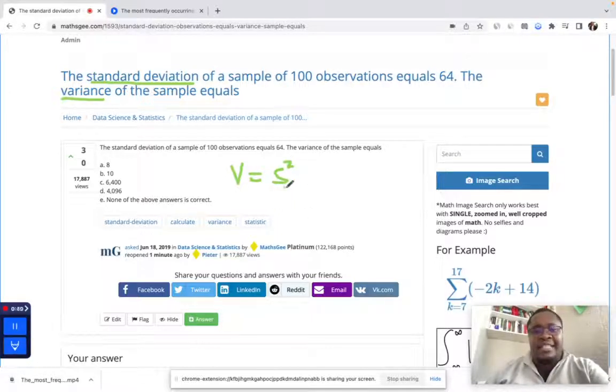The variance V is equal to the standard deviation squared. In this case, since we are given the standard deviation, it's easy to find the variance. The variance would be 64 squared.